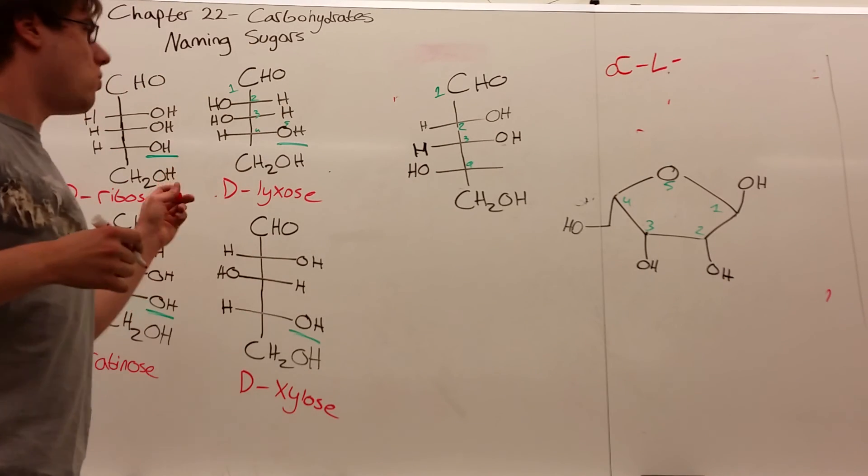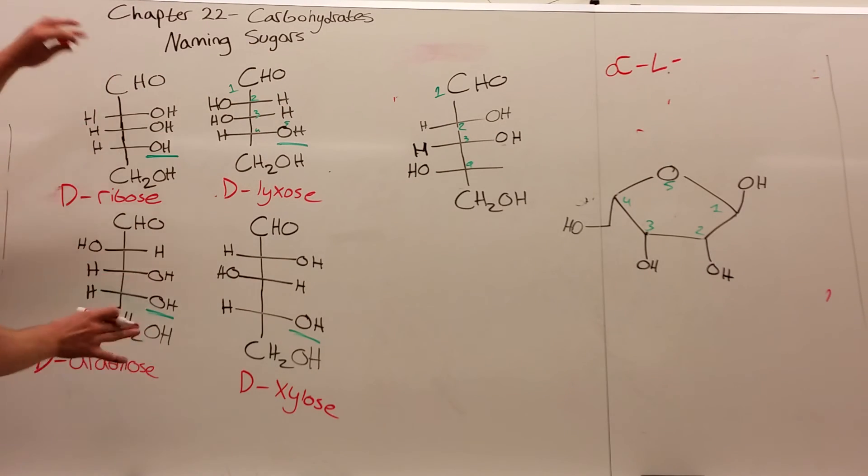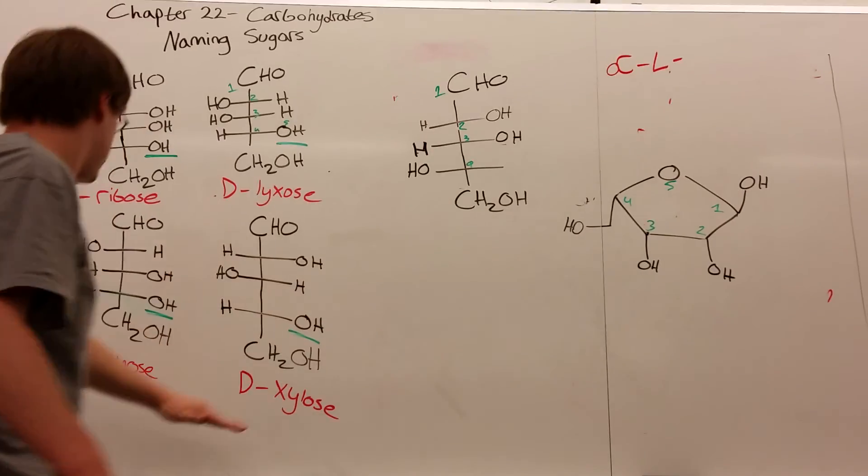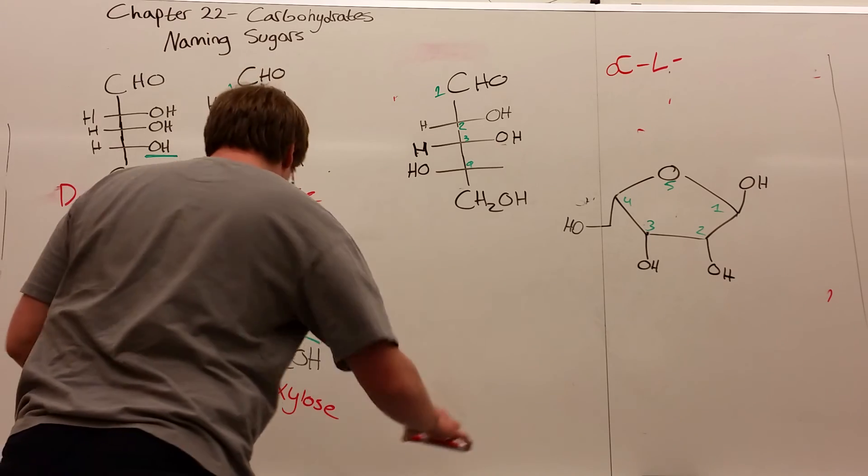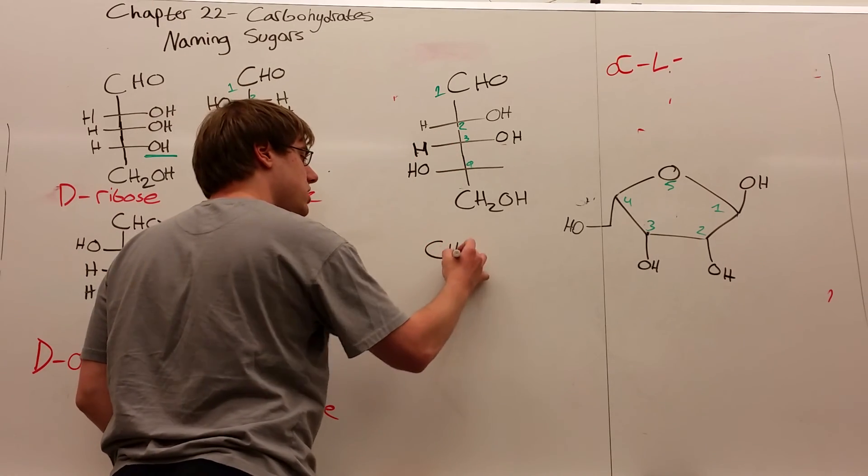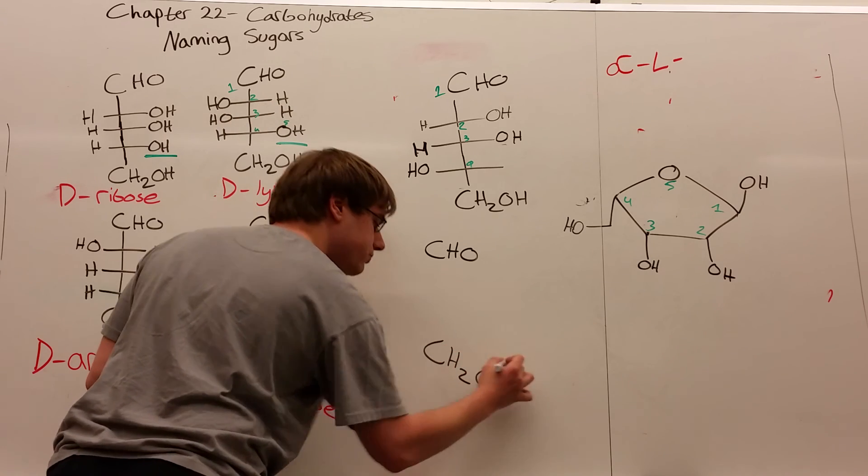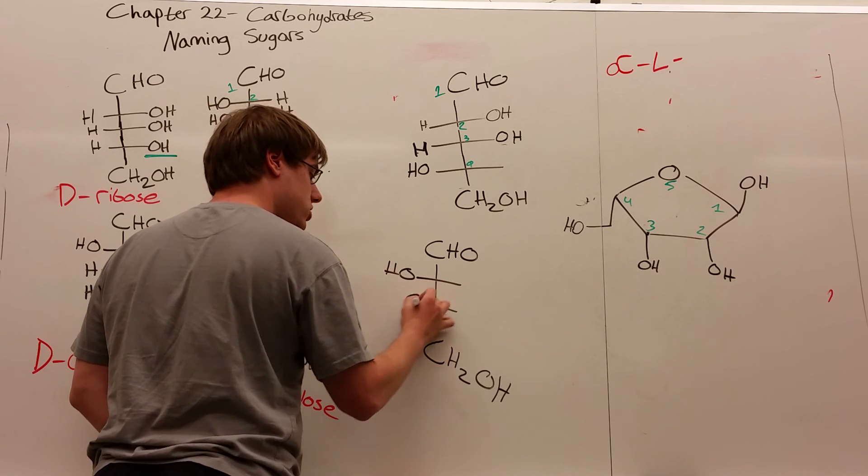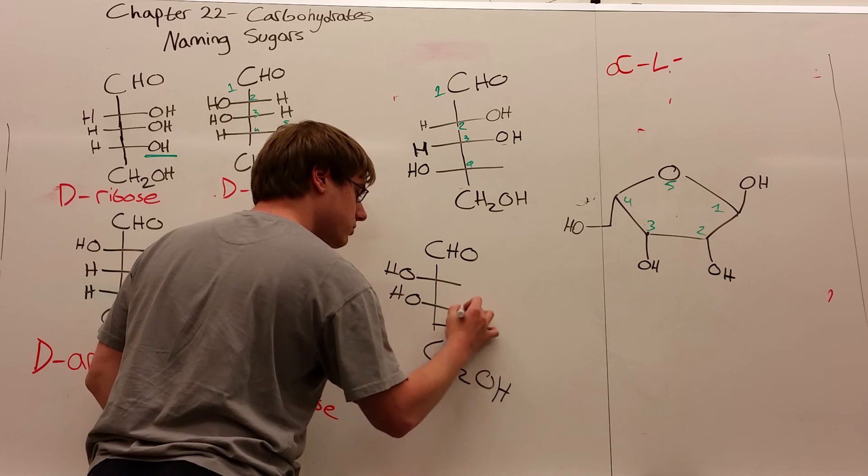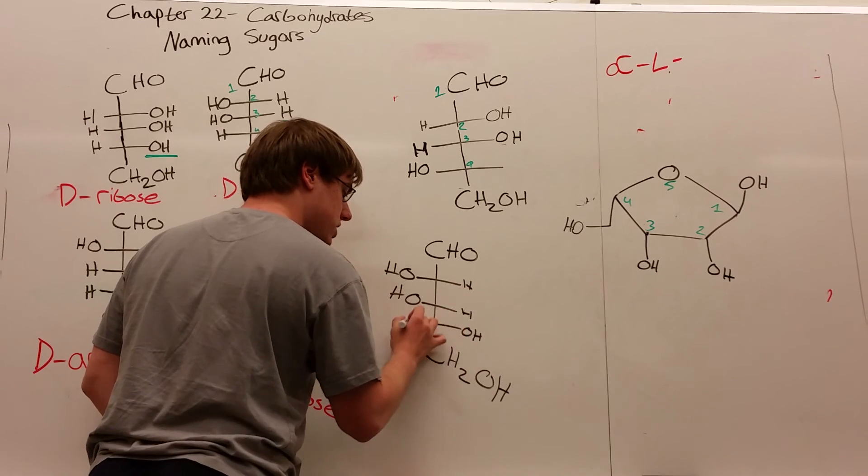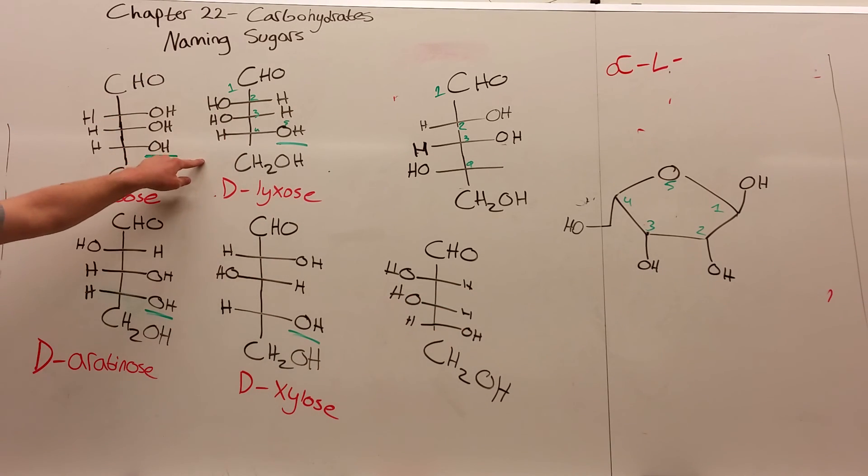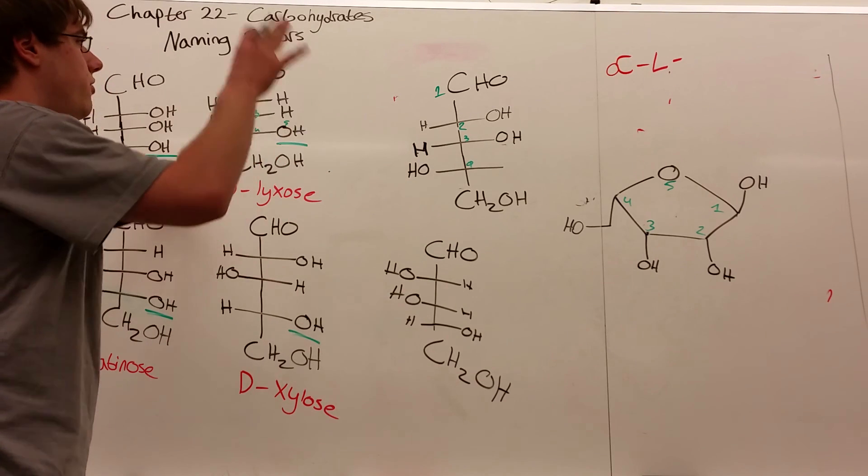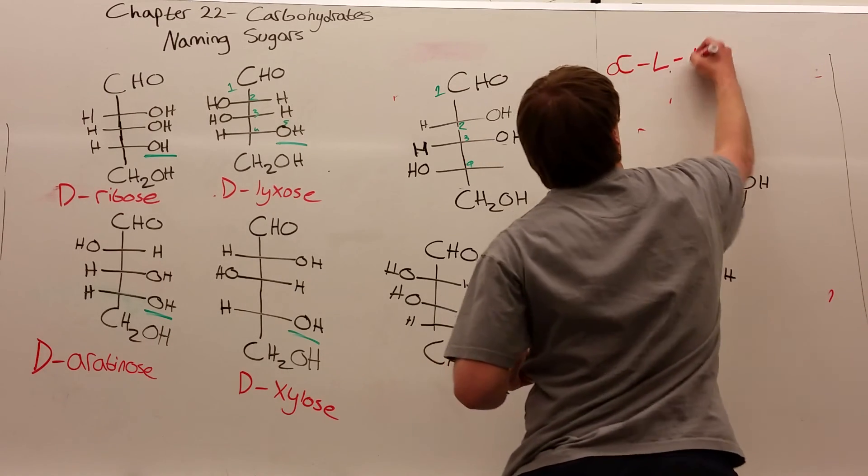Now we have to figure out which D sugar it's comparable to. Draw the mirror image because we gave you D sugars, not L sugars. The D version has CHO and CH2OH on the ends, but now OH on the right, OH on the right, and OH on the left—which is D-lyxose. This Haworth projection is alpha-L-lyxose.